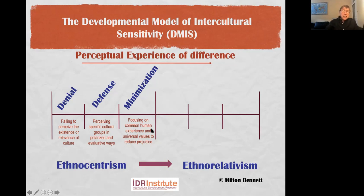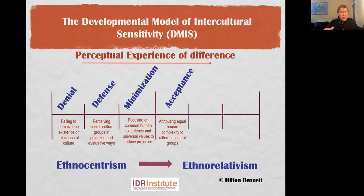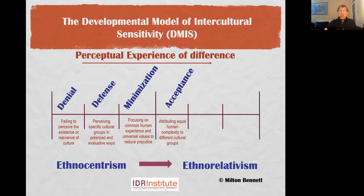The move across into acceptance is the real shift into ethno-relativism, which allows us to attribute equal human complexity to others — equal humanity. We see other people as equally human, but differently complex to ourselves. This is the basis for being able to learn about other cultures and interact with them in ways that don't assume they must be like us, and that if they're not, there's something wrong with them.